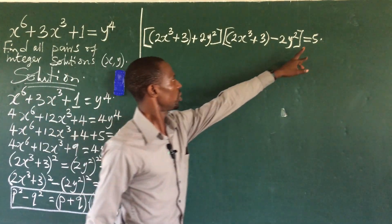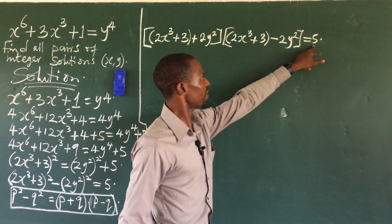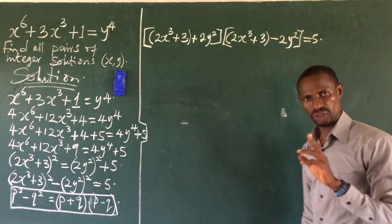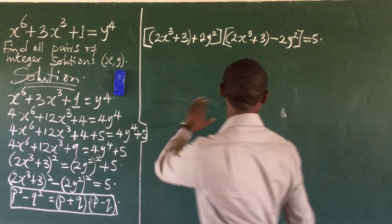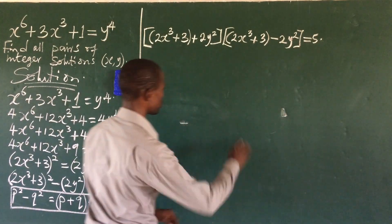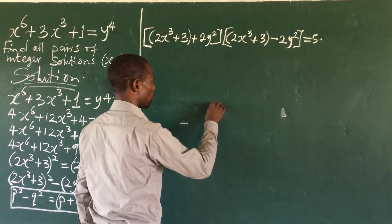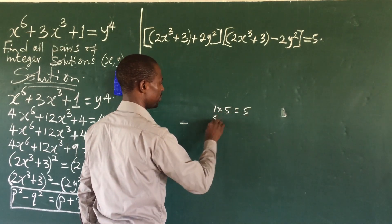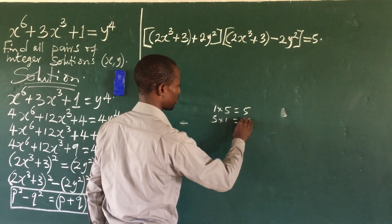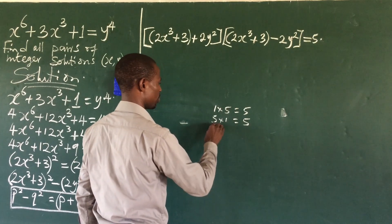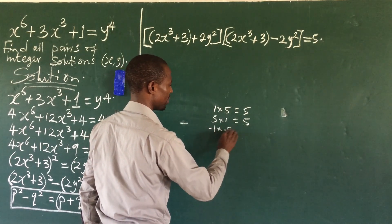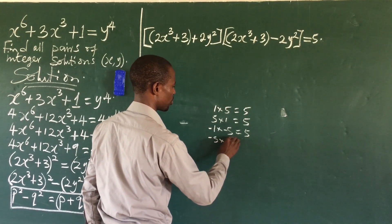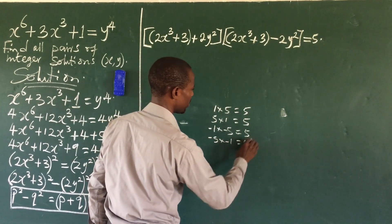At this point, we look for factors of 5. Since 5 is a prime number, we have just a few factorizations: 1 × 5, 5 × 1, (−1) × (−5), and (−5) × (−1). So there are four cases to consider.